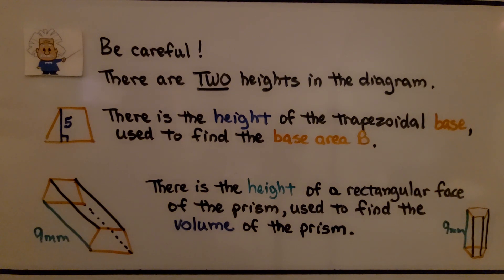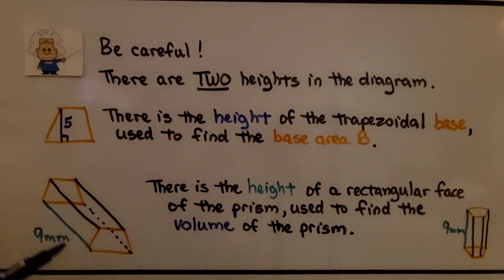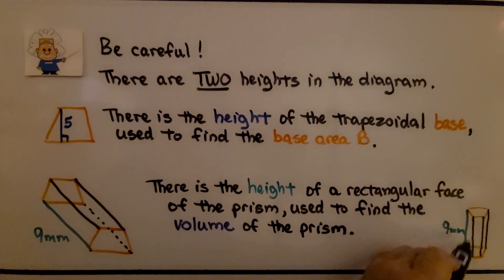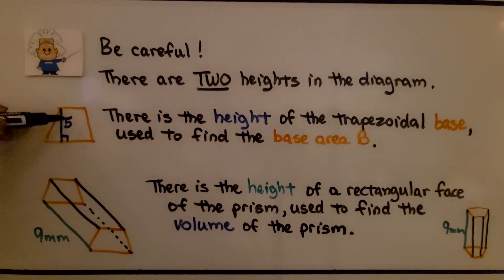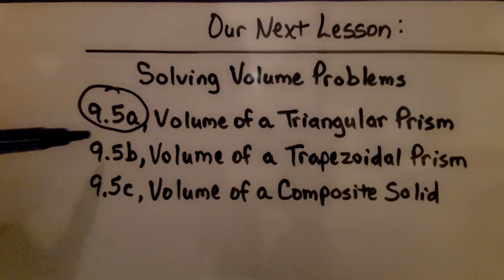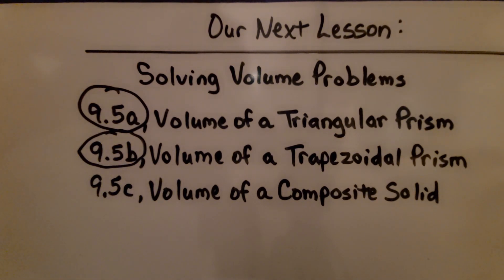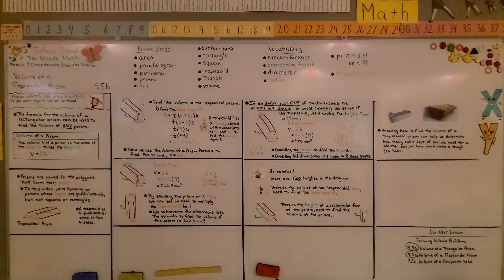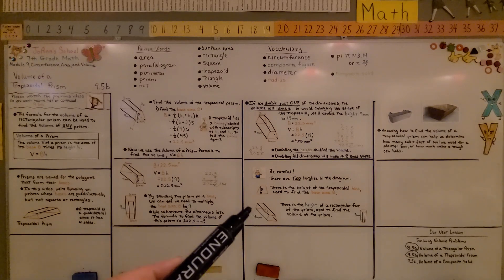Please be careful — there are two heights in the diagram. There is the height of the trapezoidal base, which we use to find the base area B. And there is the height of the rectangular face of the prism, which we use to find the volume of the prism. Don't get these confused. One height is for the base area B; the other is for the volume of the prism formula and runs along the side.